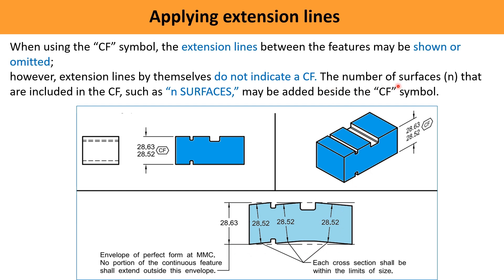The number of surfaces N that are included in the CF — such as N surfaces — may be added beside the CF symbol. Sometimes it is difficult to understand how many surfaces or interruptions there are; there may be five, six, or eight. So beside the CF symbol we can add 'N surfaces,' 'eight surfaces,' 'five surfaces,' and so on, making it easy to understand.